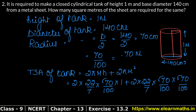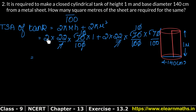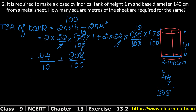After cancellation, the first term gives 2 × 22 = 44 upon 10, and the second term gives 44 × 7 = 308 upon 100. So we get 44/10 + 308/100, which is 4.4 + 3.08. The total surface area of the tank is 7.48 square meters.